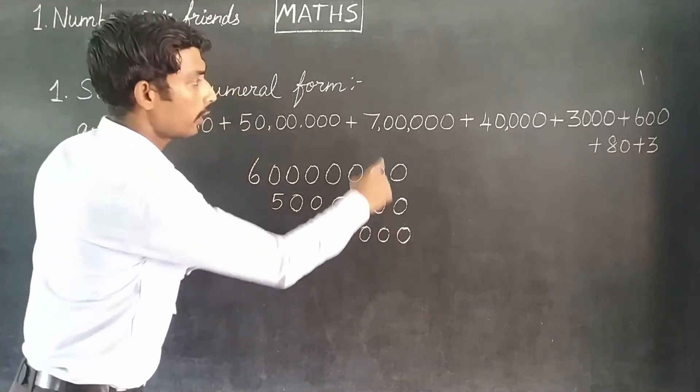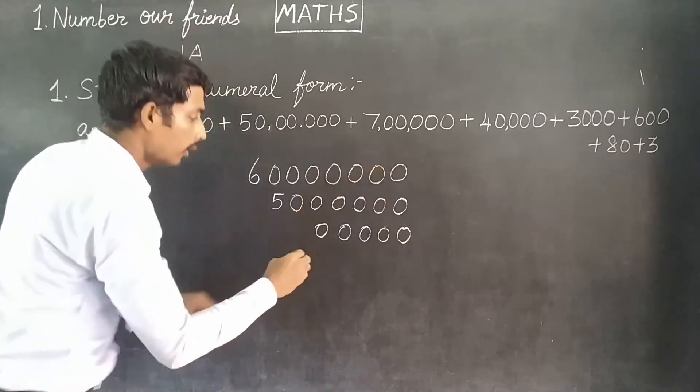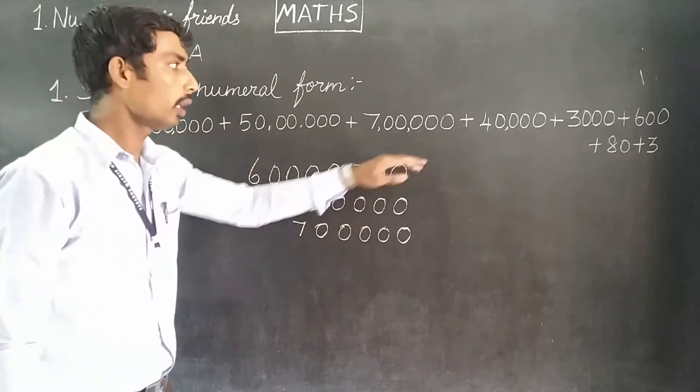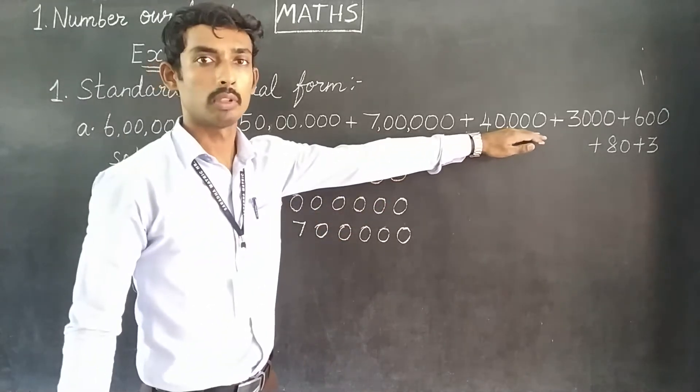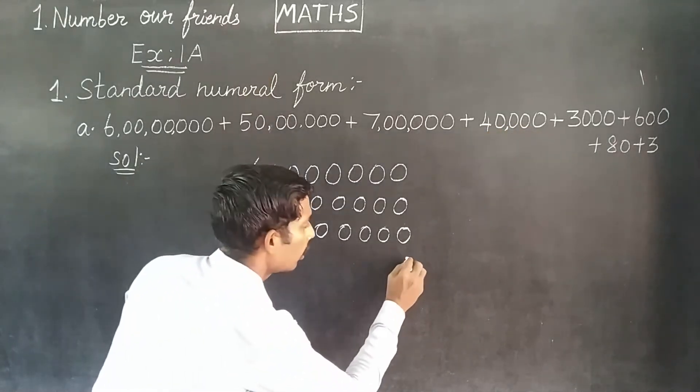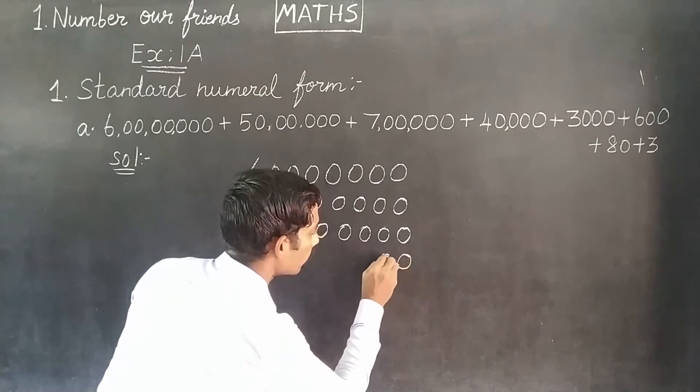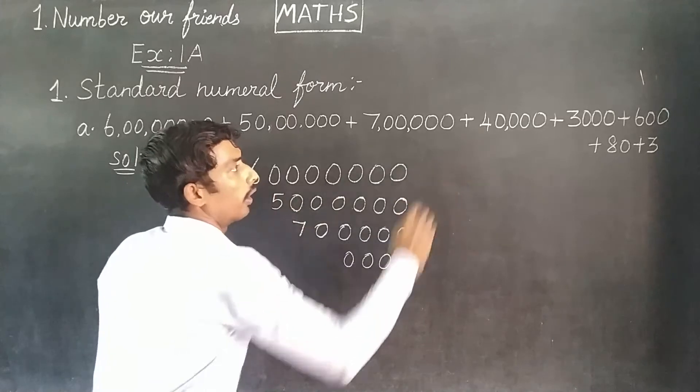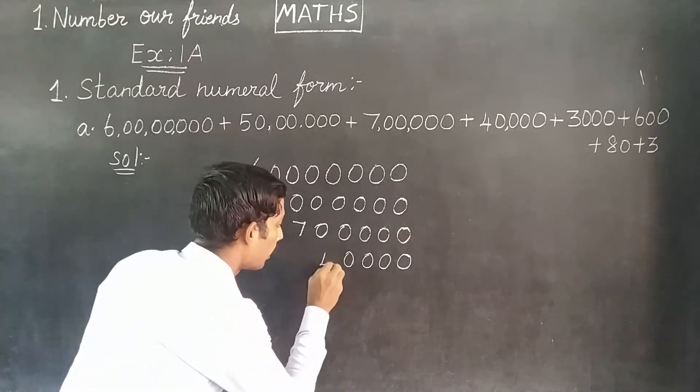Now 5 has this place value, 7 is in lakh place. Here, 4 is 40,000. This is 4 followed by zeros. 1, 2, 3, 4 - so 4 is in ten thousands place.